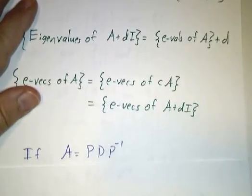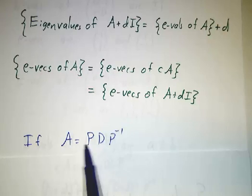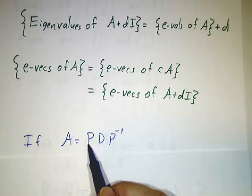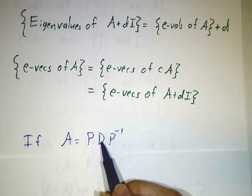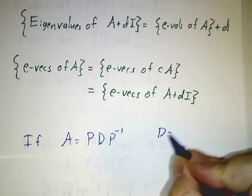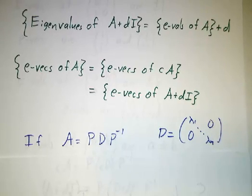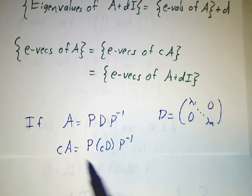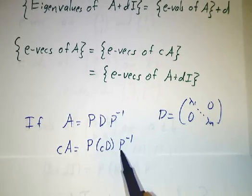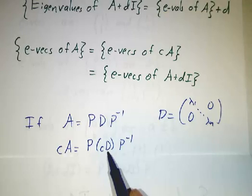Now, we can understand this from the point of view of factorization. If we can factorize a matrix as PDP', where the columns of P are the eigenvectors, and the diagonal entries of D are the eigenvalues. So D is lambda 1 through lambda n. Then if you take c times A, well that's P times c times DP'. So the eigenvectors are the same, the P is the same, the eigenvalues are a factor of c times larger.